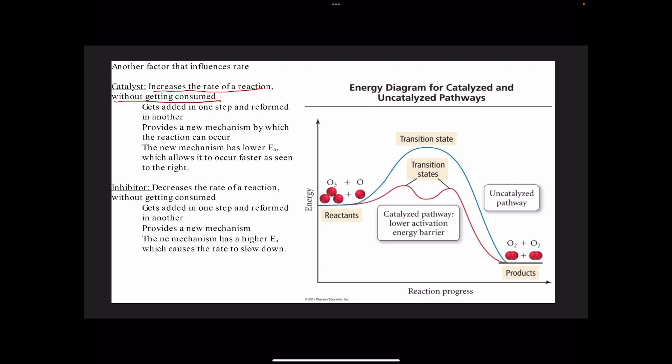We would use an inhibitor if we had a particularly dangerous reaction rate that we wanted to slow down, or we would use that inhibitor if we wanted to prevent something from decomposing very rapidly. We would store it with an inhibitor, and that way it would slow that rate down.